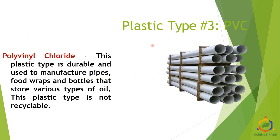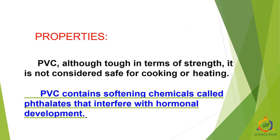Type 3 is PVC — polyvinyl chloride. This plastic type is durable and used to manufacture pipes, food wraps, and bottles that store various types of oil. This plastic type is not recyclable. Although tough in terms of strength, PVC is not considered safe for cooking or heating. It contains softening chemicals called phthalates that interfere with hormonal development in human beings.